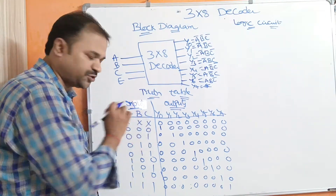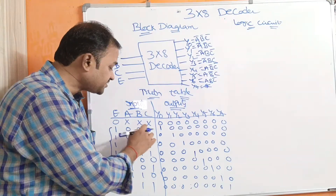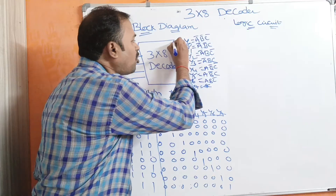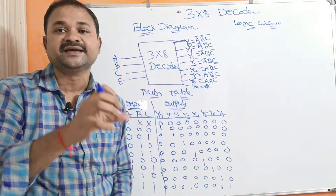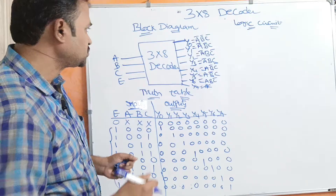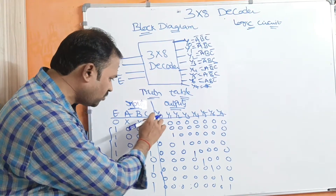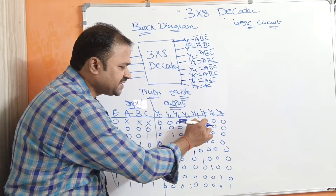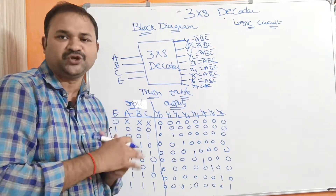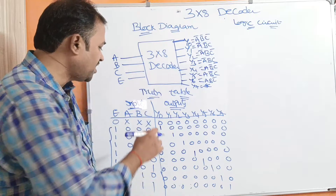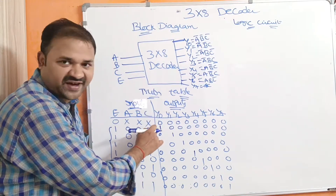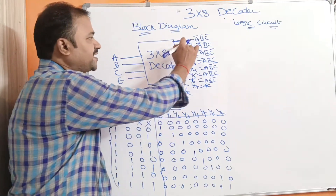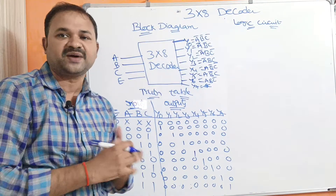First combination: triple zero. If the inputs are triple zero then the first output line, Y0, will be active. So Y0 will become one while remaining combinations Y1, Y2, Y3, Y4, Y6, Y7 are zero. So when Y0 is one then the input combination is 0, 0, 0, which means A bar, B bar, C bar. So Y0 equals A bar B bar C bar.